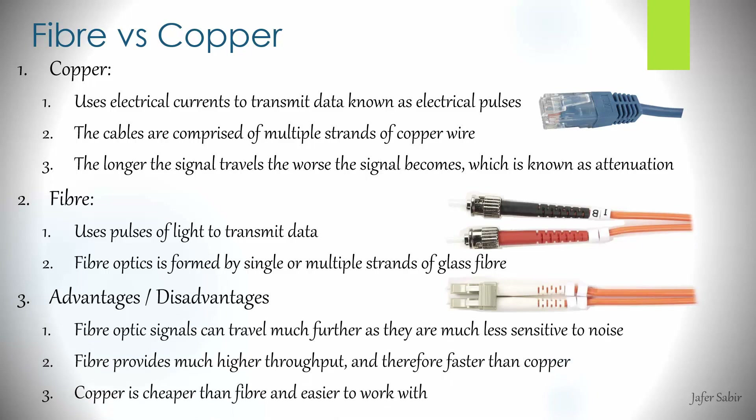Comparing the two, fiber optic signals can travel much further as they are much less sensitive to noise and electromagnetic interference than copper cables, with distances of around 80 kilometers or even further. Fiber also provides much higher throughput and is therefore faster than copper. Although copper wire is not as fast or able to travel as far as fiber, it's still heavily used because it's cheaper and easy to work with.